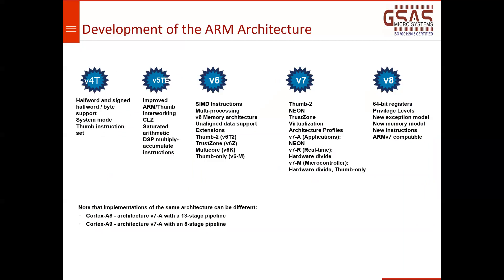Regarding the development of the ARM architecture: in the previous slide we saw versions 4, 5, and 6. Here we see version 7, version 8, and now version 9. We also have Cortex-A9, Cortex-X, and related processor cores. V8 supports up to 64-bit processing.